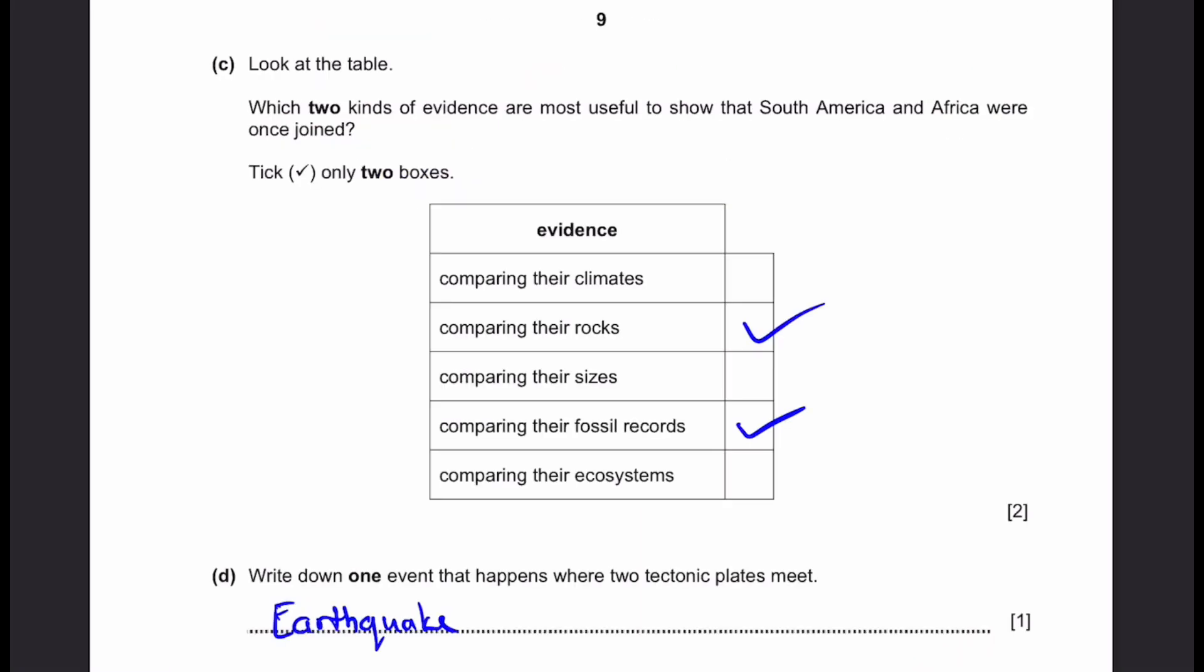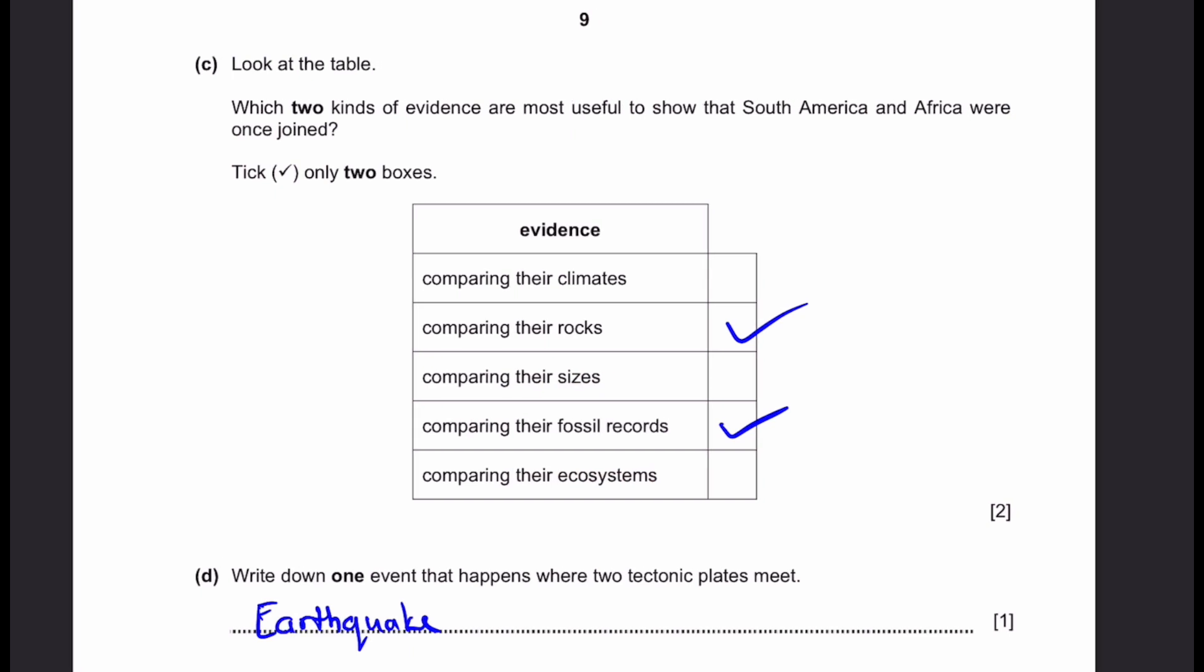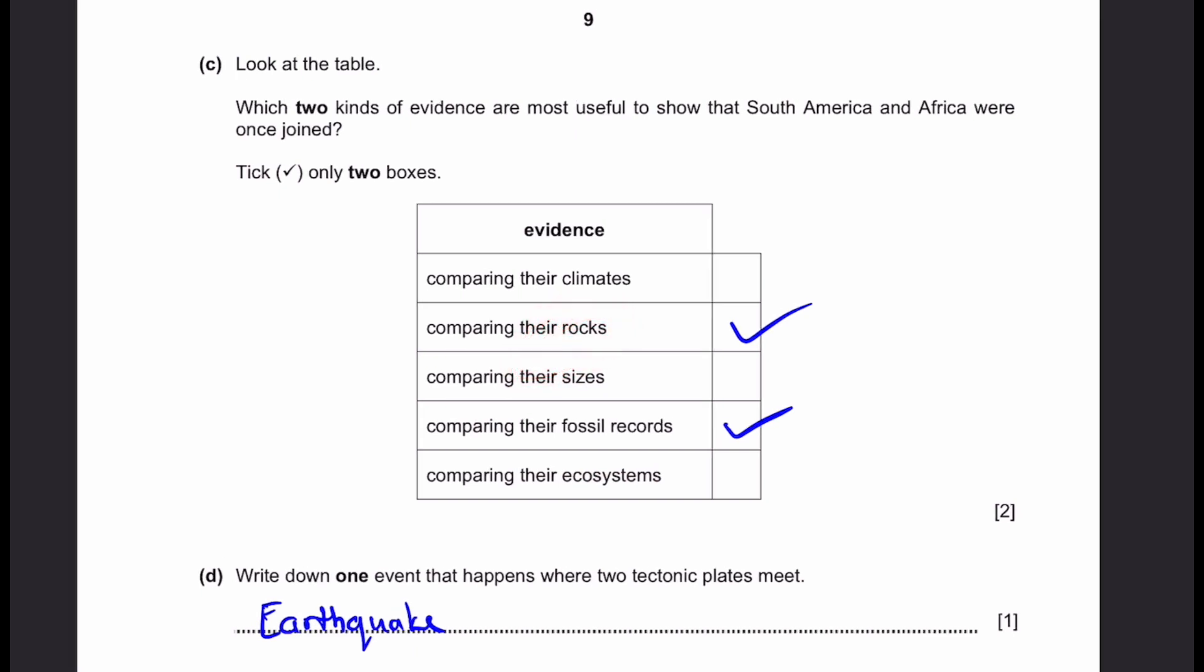Part C: Look at the table. Which two kinds of evidence are most useful to show that South America and Africa were once joined? Tick only two boxes. The answer is comparing the rocks and fossil records. Because if the ecosystems millions of years ago were similar, then the fossil records will be similar. And if the rocks were similar millions of years ago, they'll still be now because rocks survive on Earth for a very long time before they are weathered.